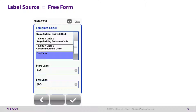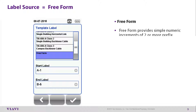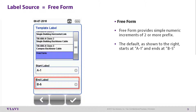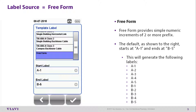Label Source Freeform provides simple numeric increments of two or more prefixes. The default shown starts at Alpha-1 and ends at Bravo-5. This will generate the following labels: Alpha-1 through 5 and Bravo-1 through 5.